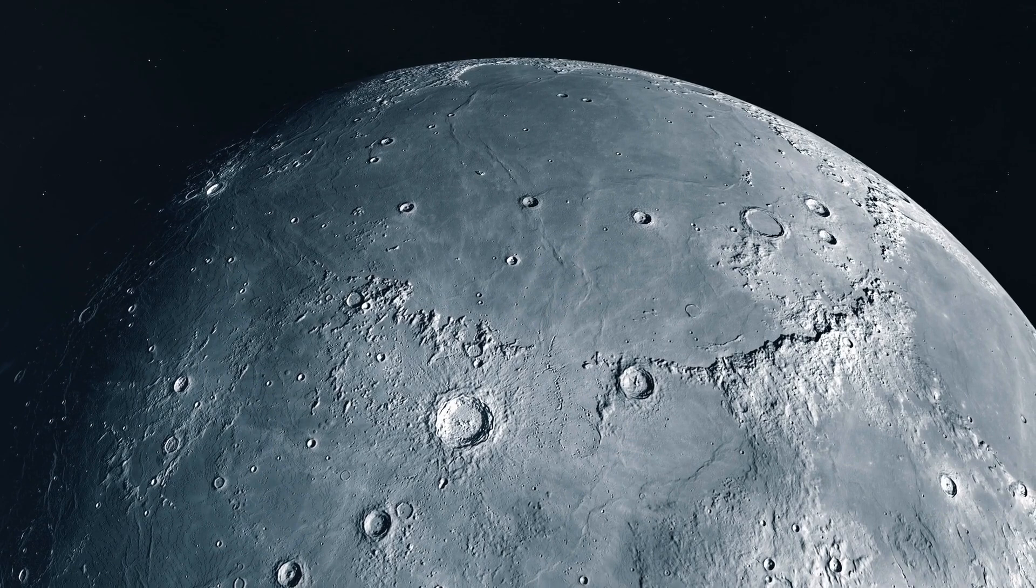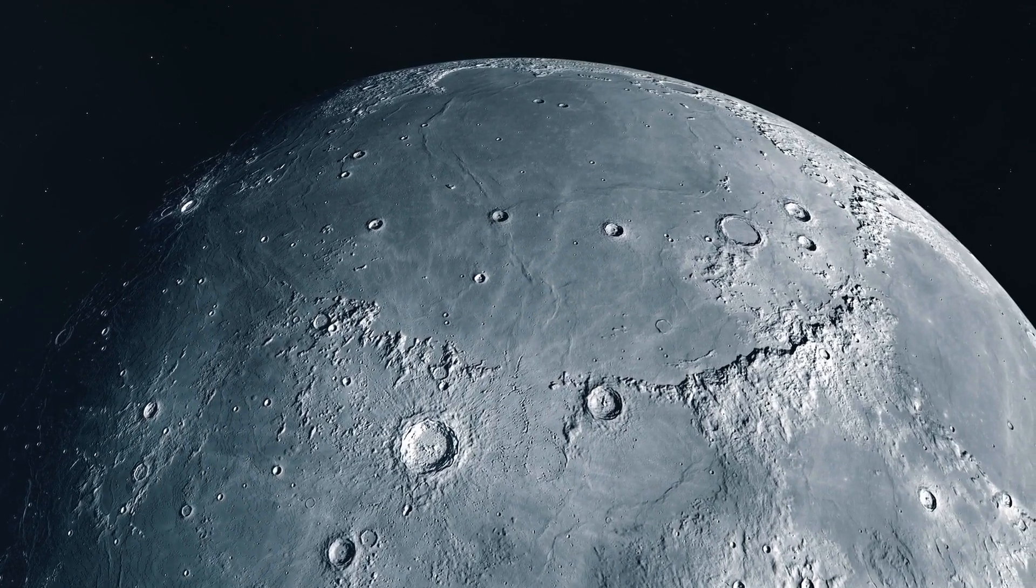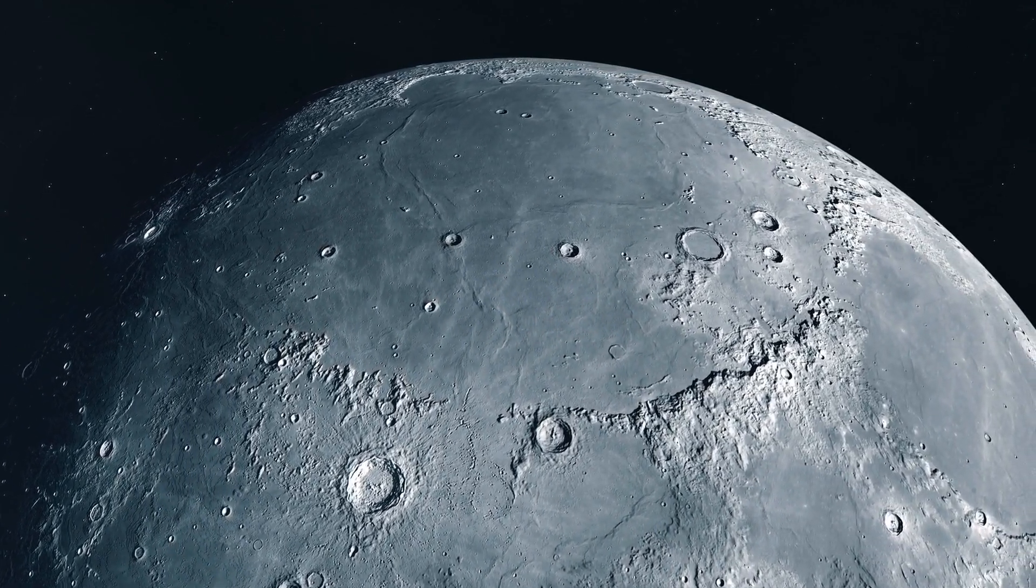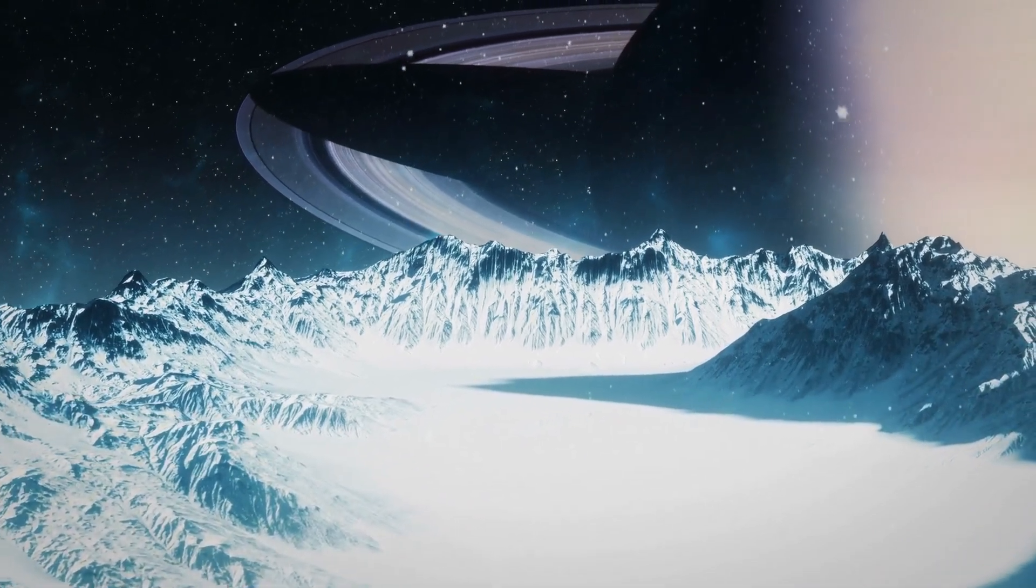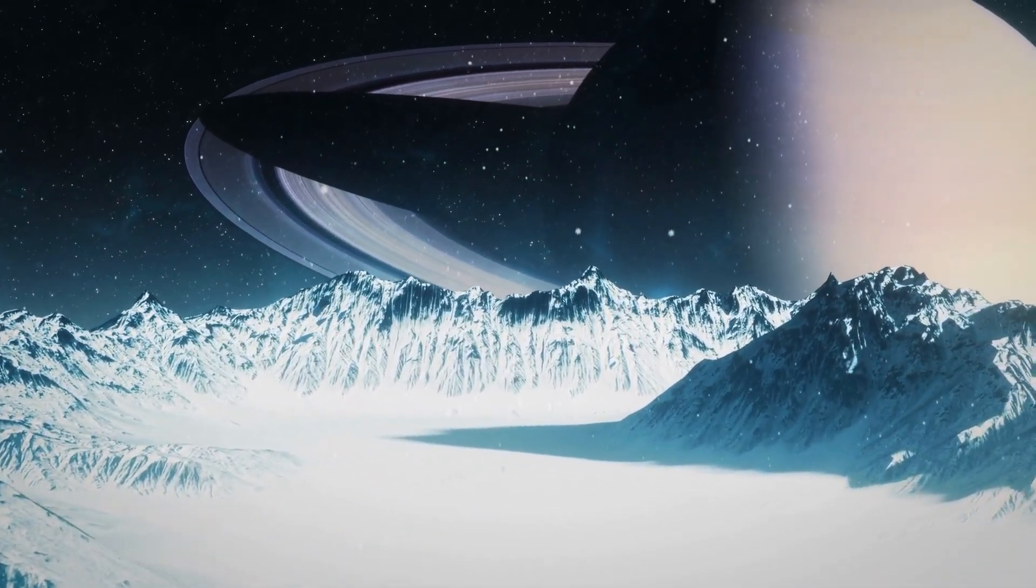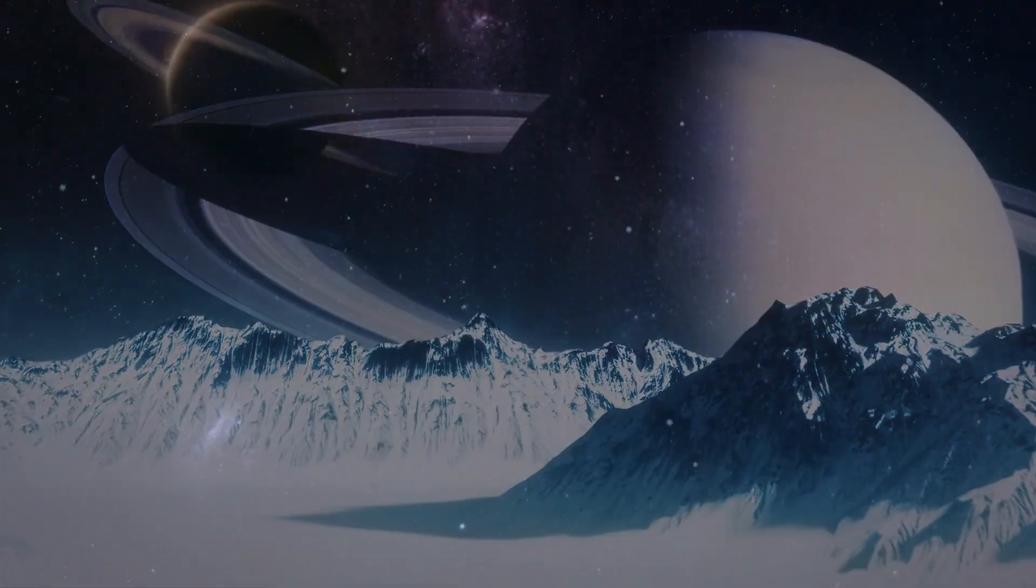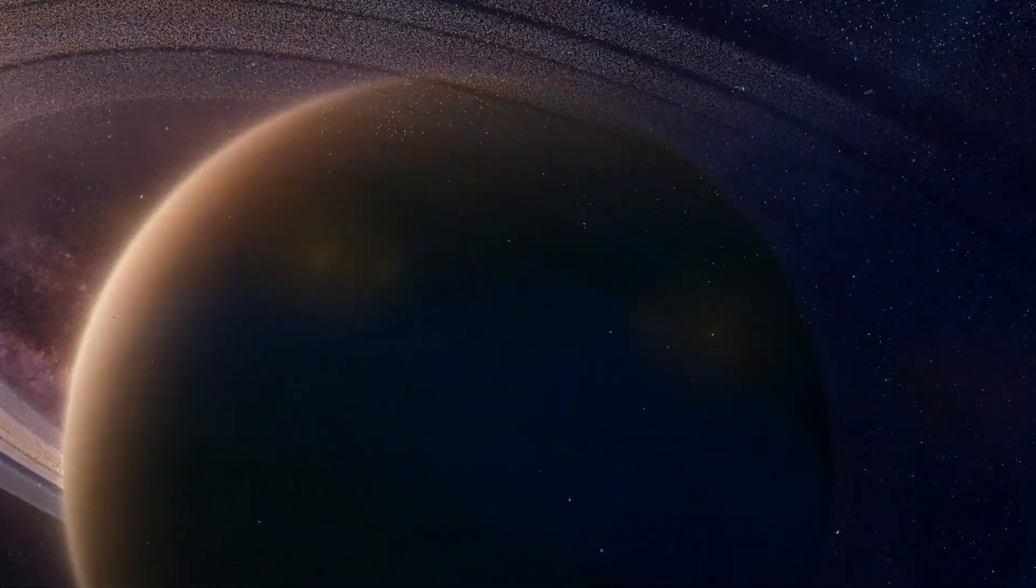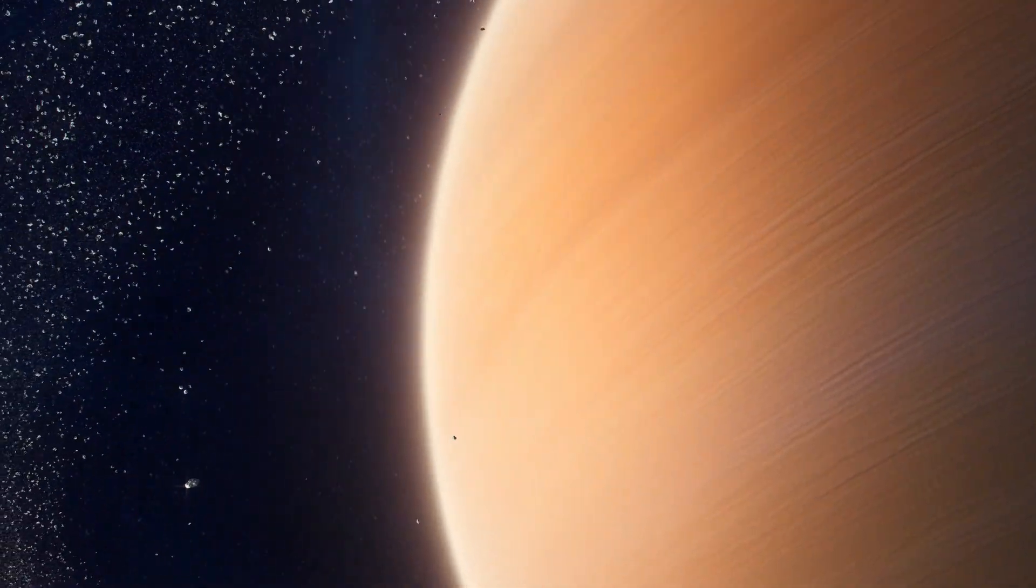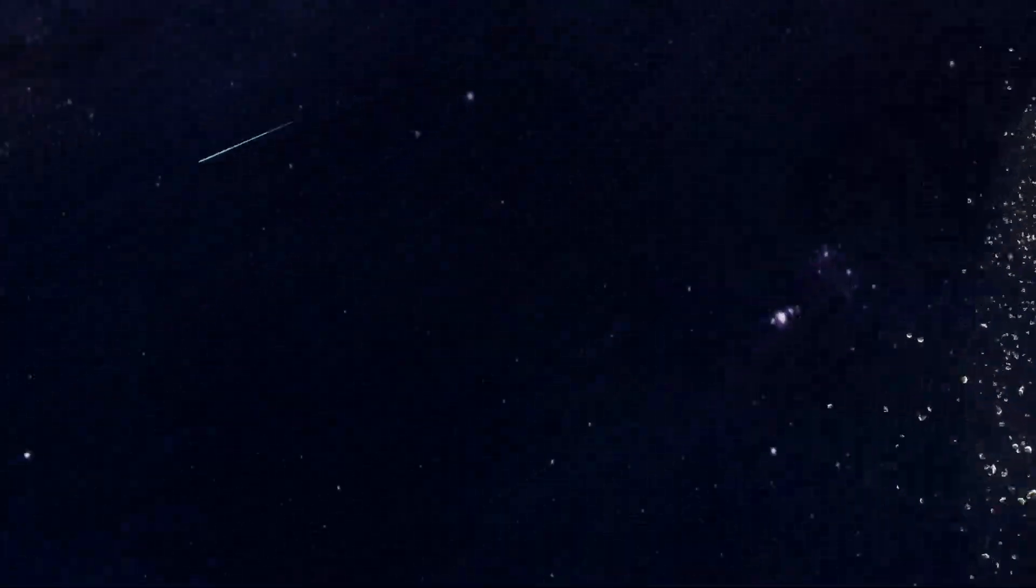Moons are often made of rock, like Earth's moon. But some moons of more distant planets can be made of ice with a rocky centre. So, while Earth has a single solitary moon, other planets can have many moons orbiting them, each adding to the fascinating diversity of objects in our solar system.